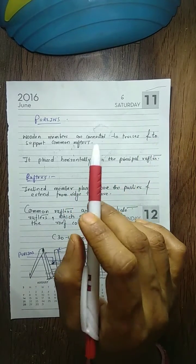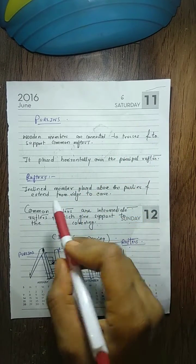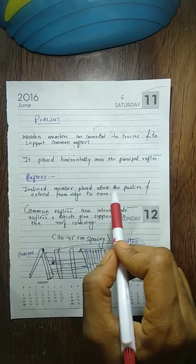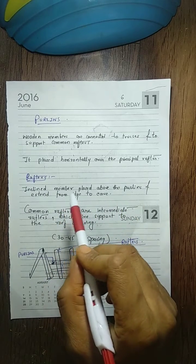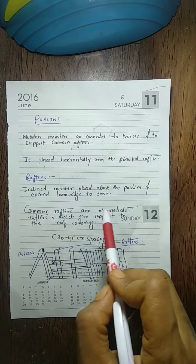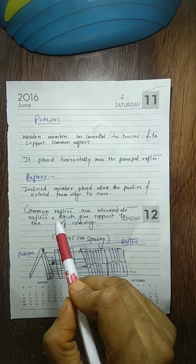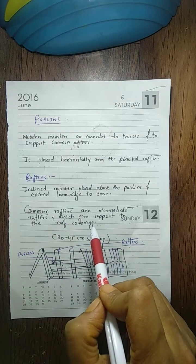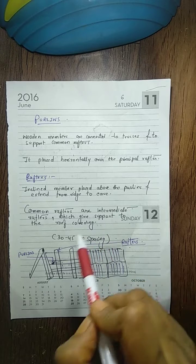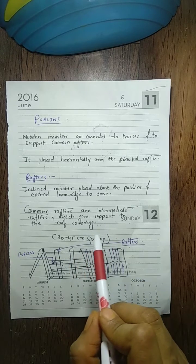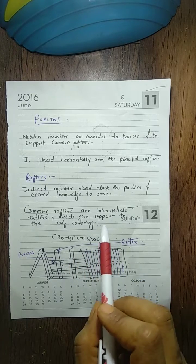Rafter means an inclined member placed above the perlin and extends from ridge to eave. Common rafters are intermediate rafters which give support to the roof covering, and the spacing between them is 30 to 45 centimeters.